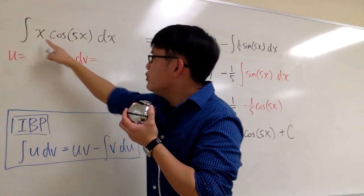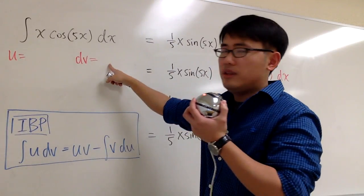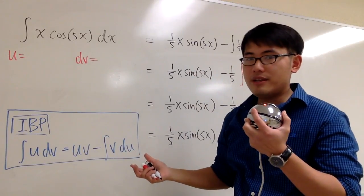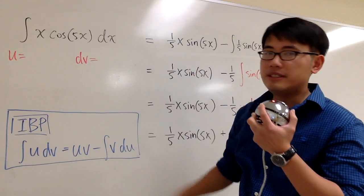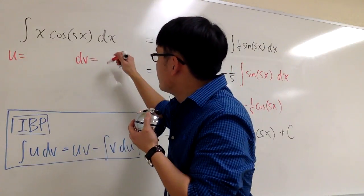In this case, you can choose x for dv, cosine of 5x for dv, because both of them are easily integrated, right? We can easily integrate both of these things. But then, we are actually going to choose cosine of 5x for dv in this situation.